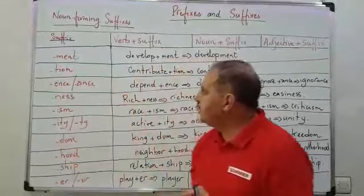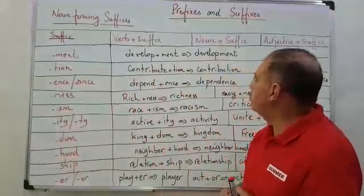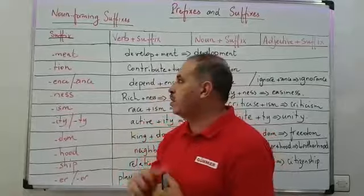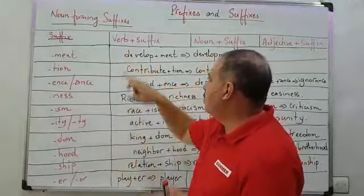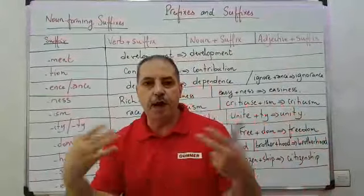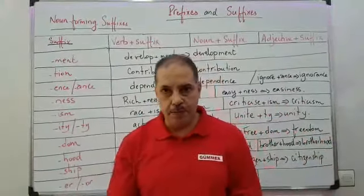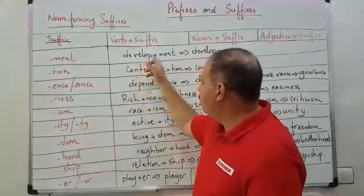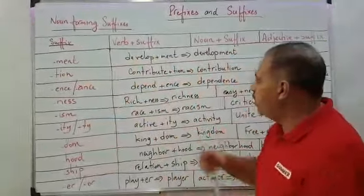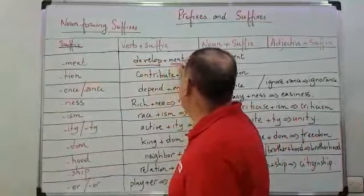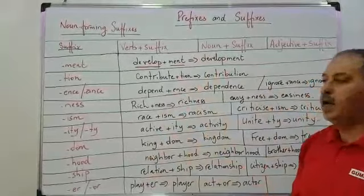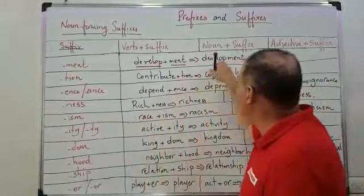We have the suffix '-ment'. For example, we start from the verb 'develop', add the suffix '-ment', and we have 'development'. So we have the verb plus the suffix and at the end we have a noun.